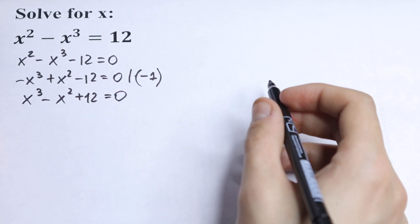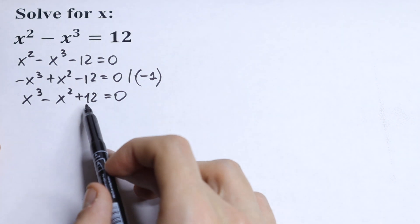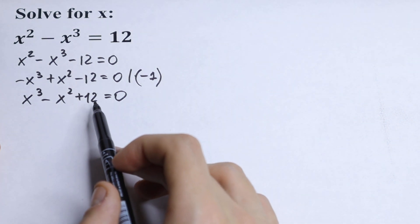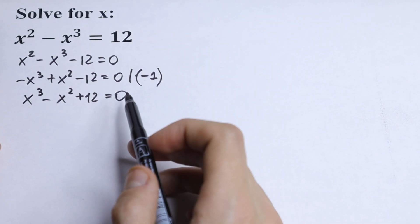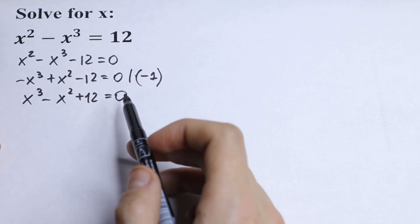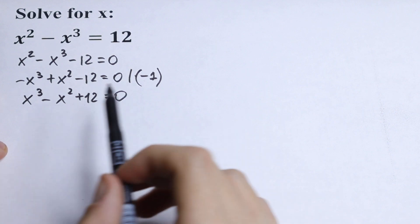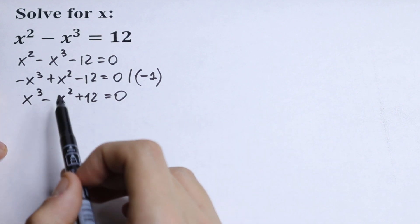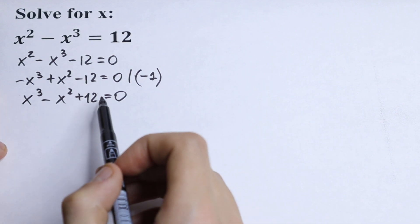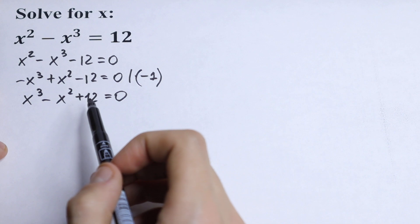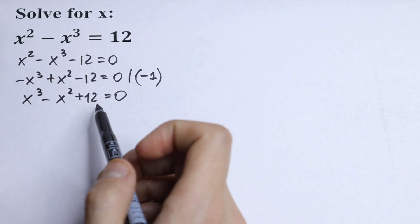How can you solve this? Of course we can find the factors of this 12, but that's too long for me. I want to suggest a quick trick right here. Because we have x cubed and x squared, this 12 can be written as 8 plus 4.